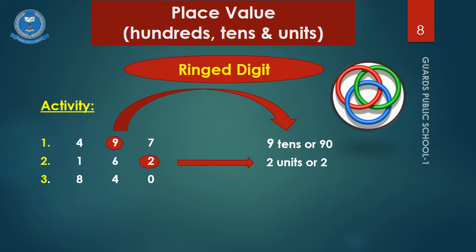Now, the last number is eight forty. And, the ring digit is eight. So, tell me, the place value of eight? Yes, it is eight hundred. I hope you all understand two and three digit place value.